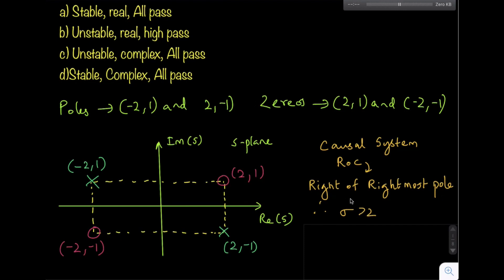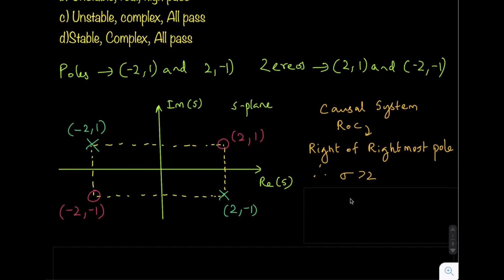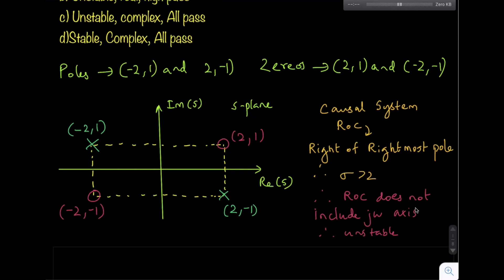The right of the rightmost pole means sigma greater than 2 is the corresponding ROC for the system. If the ROC is sigma greater than 2, the ROC does not include the j-omega axis. Since the ROC does not include the j-omega axis, this system is unstable.